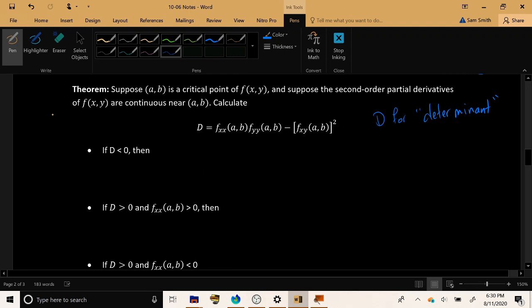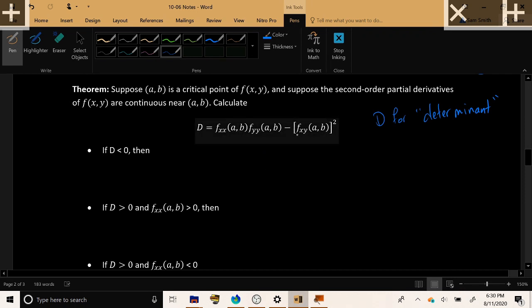So if you have spent any time working with matrices, you've heard this term before, the determinant of a matrix. This is the determinant of a particular matrix that is filled up with second derivatives. Now, you calculate this quantity, which requires taking fxx, fyy, multiplying them together, and then subtracting fxy quantity squared.